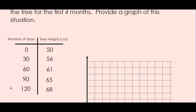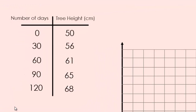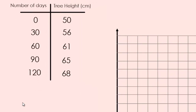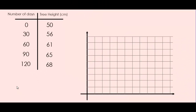Here we have the table of values that Zelda recorded, with the number of days on the left and the height of the tree on the right. We now want to represent this table in a graph.